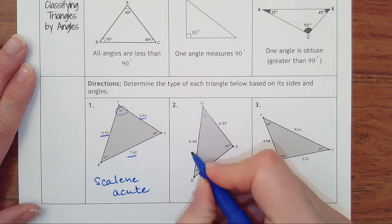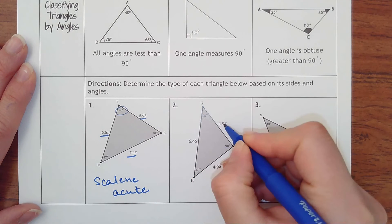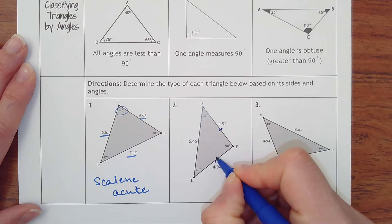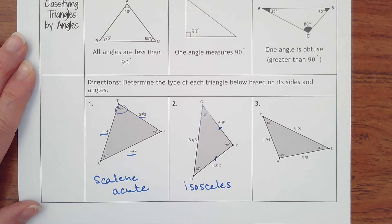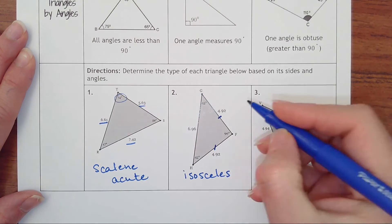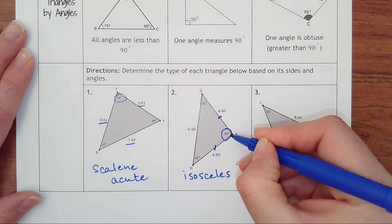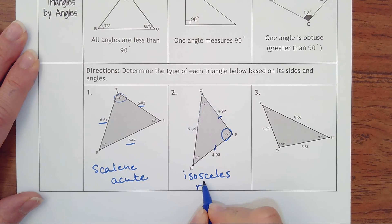Number two, I see 6.96, 4.92, and 4.92. These are the same, so that makes it an isosceles. It's always fun seeing kids try to spell isosceles. And I look at the biggest angle, which happens to be 90, so this is a right. Isosceles right triangle.